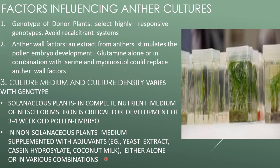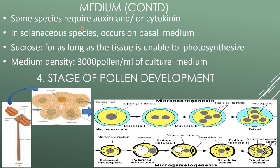For non-solanaceous plants, medium supplemented with adjuvants like yeast extract, casein hydrolysate, or coconut milk, either alone or in various combinations, are required. Some species require auxin or cytokinin, whereas solanaceous species grow on basal medium. Sucrose is required as long as tissue is unable to photosynthesize. Medium density should be approximately 3000 pollen per ml of culture medium.